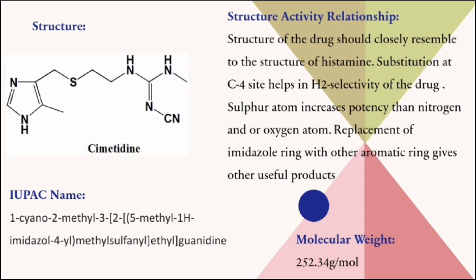Structure-Activity Relationship: The structure of the drug should closely resemble the structure of histamine. Substitution at the C4 site helps in the H2 selectivity of the drug. A sulfur atom increases potency compared to nitrogen or oxygen. Replacement of the imidazole ring with other aromatic rings gives other useful products. The molecular weight of Cimetidine is 252.34 grams per mole.